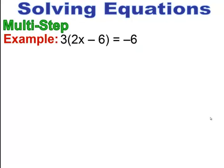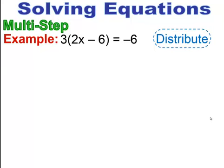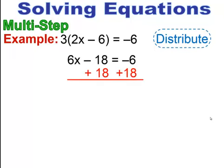Now let's do a multi-step equation where you see parentheses, which means we have the distributive property. Distribute that 3 to everything inside: 3 times 2x is 6x, and 3 times minus 6 is minus 18, bringing down the equals negative 6. Now it's a two-step equation — add 18 to both sides to get 6x equals 12, then divide through by 6 to get x equals 2.